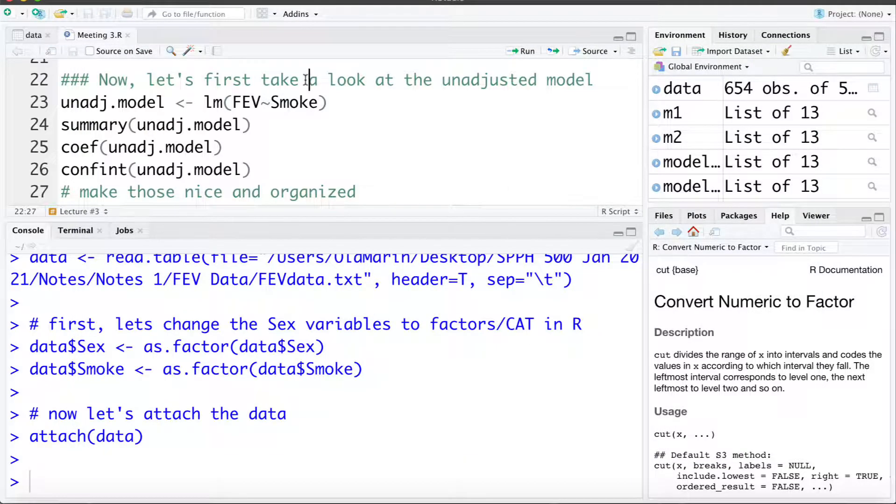We've been working with the FEV data set and I've already imported the data and attached it. So first let's go ahead and fit an unadjusted model. Here we're going to try and estimate the effect that smoking has on FEV or lung capacity and I'm going to save that in an object called unadjusted model. So let's fit that model.